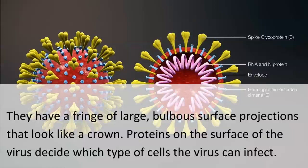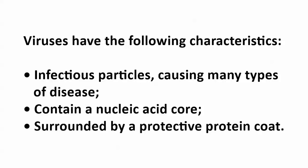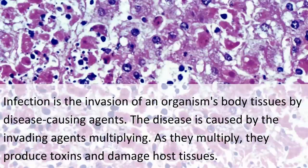Proteins on the surface of the virus decide which type of cells the virus can infect. Viruses have the following characteristics: infectious particles causing many types of disease contain a nucleic acid core surrounded by a protective protein coat. Infection is the invasion of an organism's body tissues by disease-causing agents. The disease is caused by the invading agents multiplying. As they multiply, they produce toxins and damage host tissues.